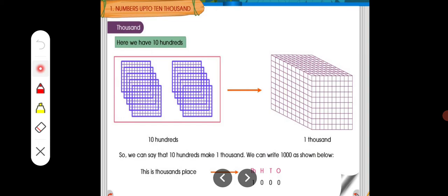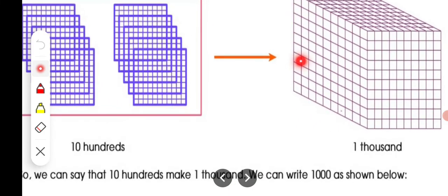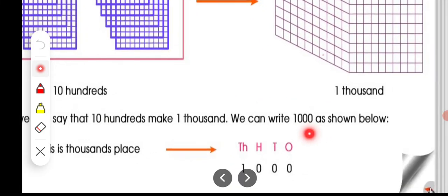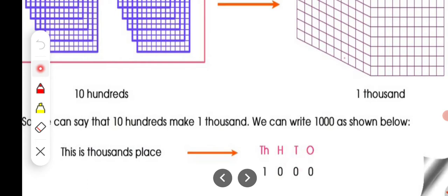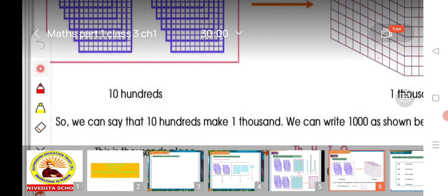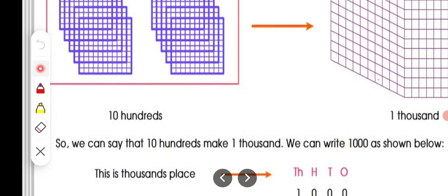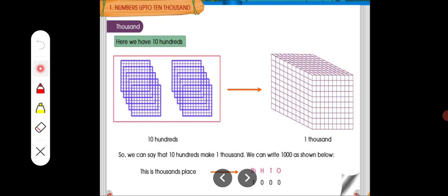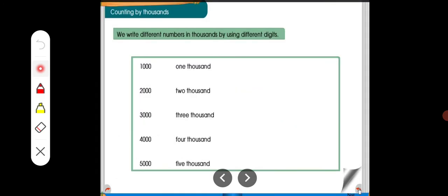Now we should know how to expand this. See here: 1s, 10s, 100s, and 1000s. This is the way to expand. For 1000: 0 in 1s, 0 in 10s, 0 in 100s, and only 1 in the 1000s place. Okay children, now we shall move next.